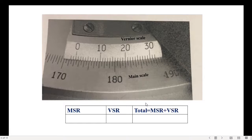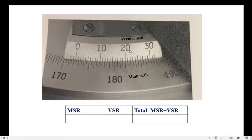This is a zoomed view of the vernier table. It has two scales: one is the main scale and another is the vernier scale. The main scale is marked from 0 to 360 degrees and the vernier scale is marked with 0 to 30 divisions — 10, 20, and 30 divisions. We have to note both the main scale and vernier scale readings.